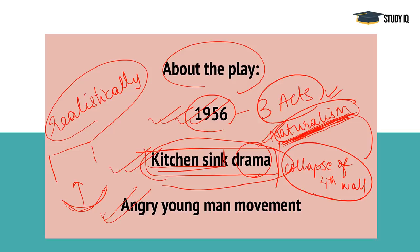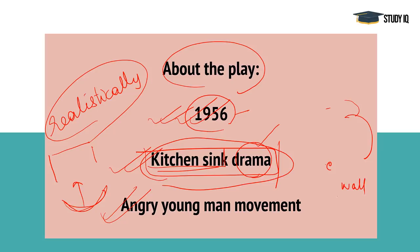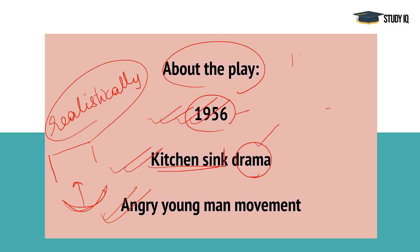This play deals with the Angry Young Man movement. This is an important thing to focus on. In the 1940s, you have to understand the context. World War II was running from 1939 to almost 1944. England and the United Kingdom had to face enormous forces during this period.